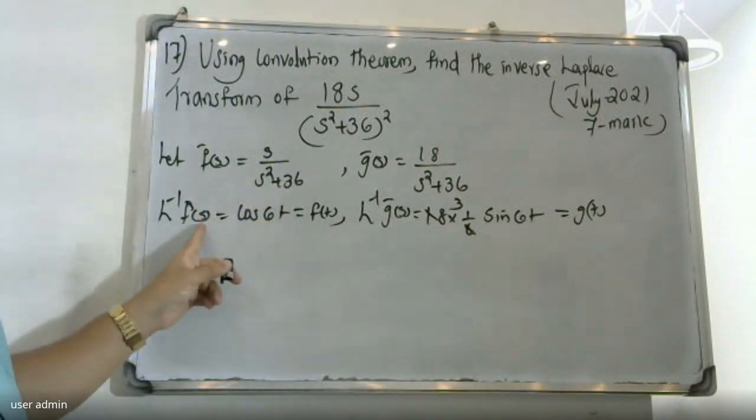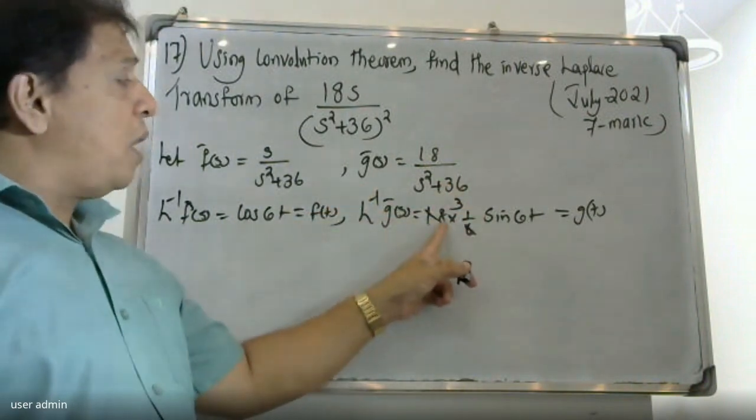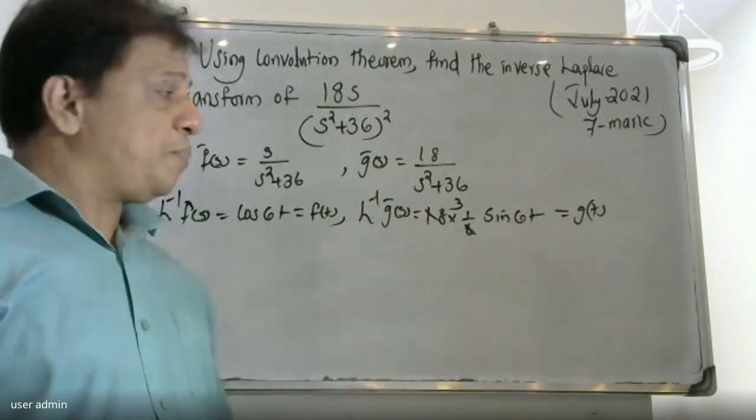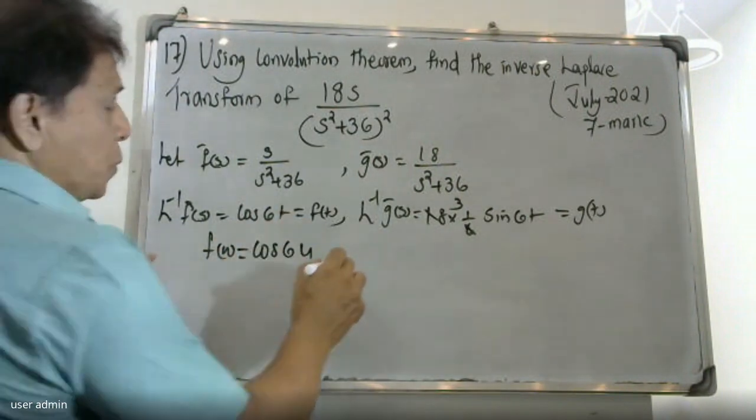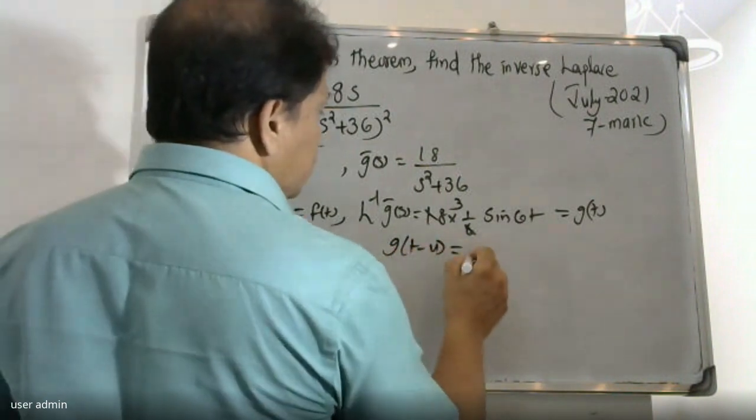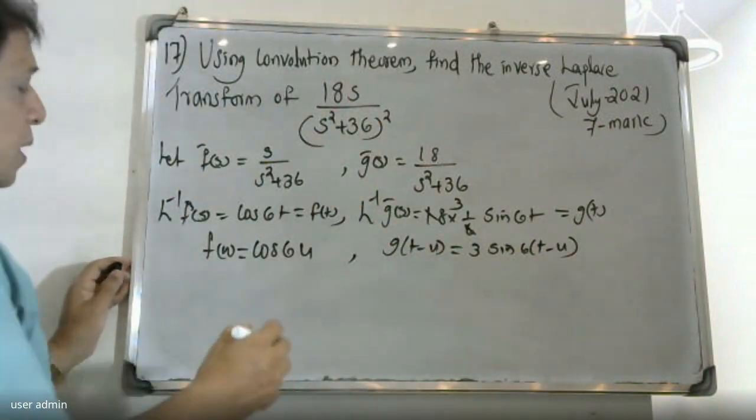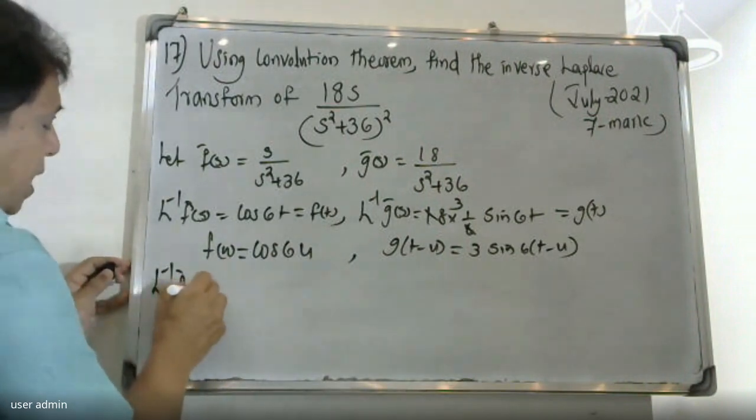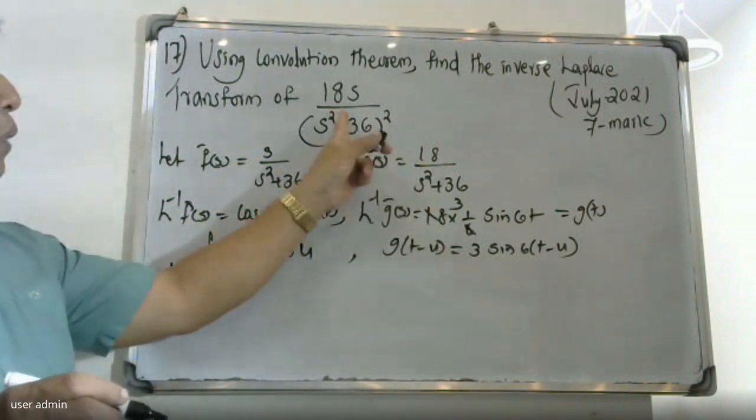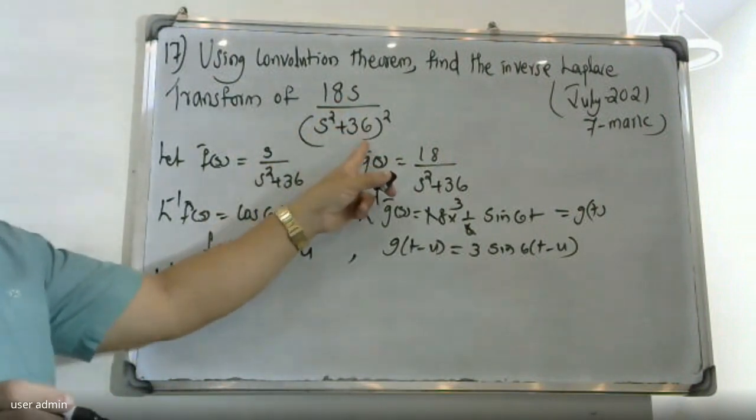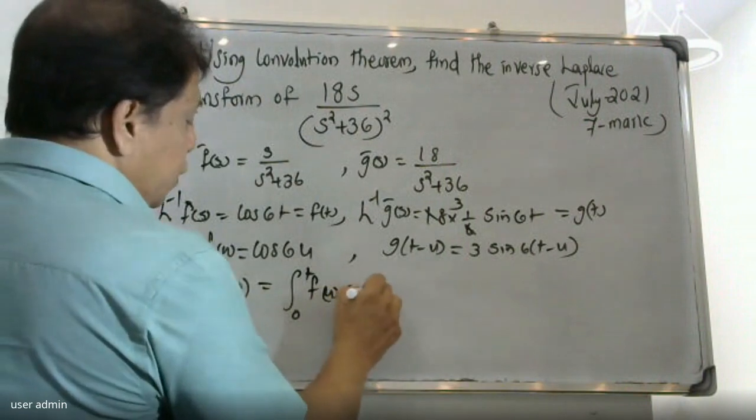The inverse Laplace of 18 divided by s squared plus 36 is equal to g(t). Now f(u) equals cos 6u, and g(t minus u) equals 3 sin 6(t minus u). This is the formula for L inverse of f bar times g bar. L inverse of s by s squared plus 36 times 18 by s squared plus 36 equals integral 0 to t of f(u)g(t minus u)du.